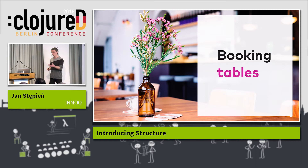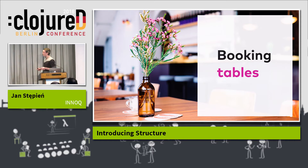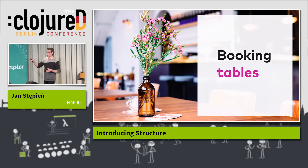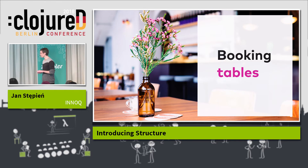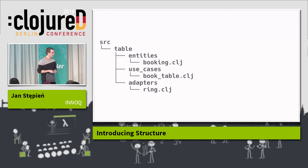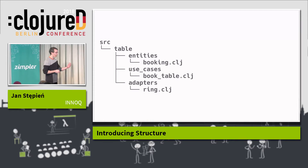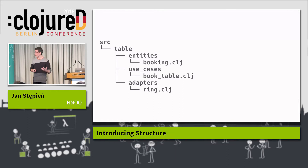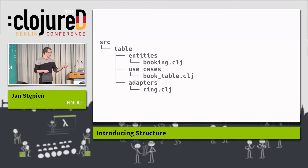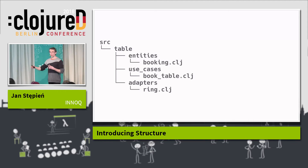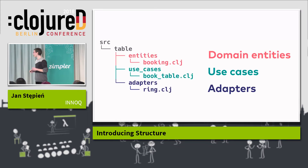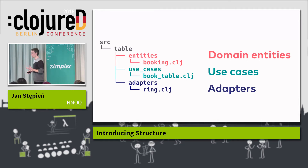Let's create a simple service which will expose an HTTP interface, allowing us as a client to send a POST request to a resource to book a table in a restaurant. We will start with just three files: an entity — a booking — a use case of booking a table, and then an adapter which will translate our pure internal logic into the world of HTTP, which we will interact with using the Ring library. This corresponds closely to the division into three sections you saw just a minute ago.